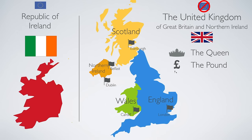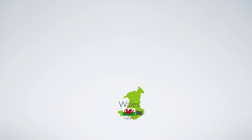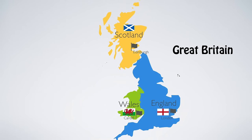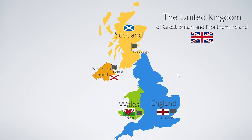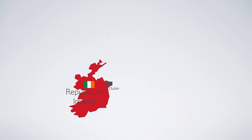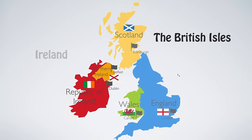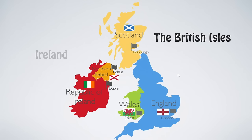So, a quick recap. This is England. This is Wales. This is Scotland. These three regions are on the island of Great Britain. This is Northern Ireland. These four regions together are the United Kingdom of Great Britain and Northern Ireland. This country is called the Republic of Ireland. Both Northern Ireland and the Republic of Ireland are on the island called Ireland. These two islands, Ireland and Great Britain, form the British Isles.